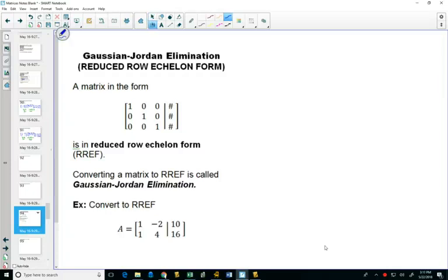The next level is the Gaussian-Jordan elimination. So with Gaussian elimination, we just wanted to get these to be zeros. In Gaussian-Jordan elimination, we also want these to be zeros, and we want our diagonal to all be ones.